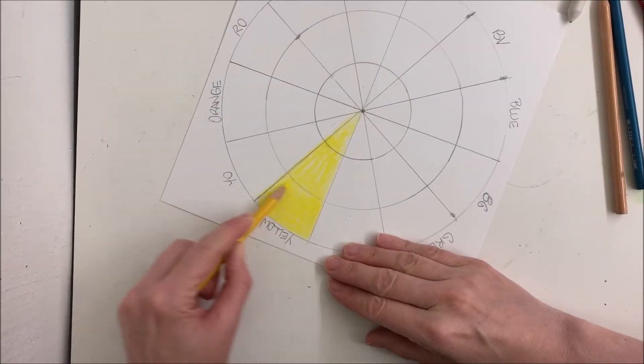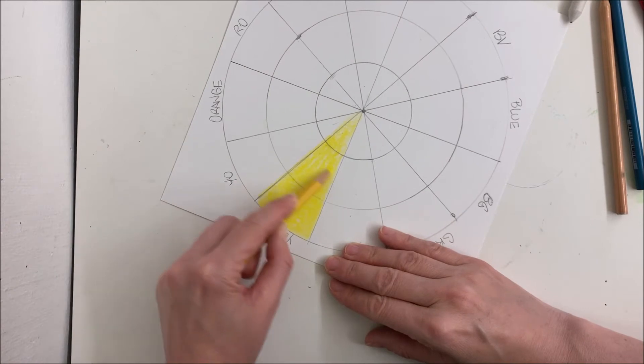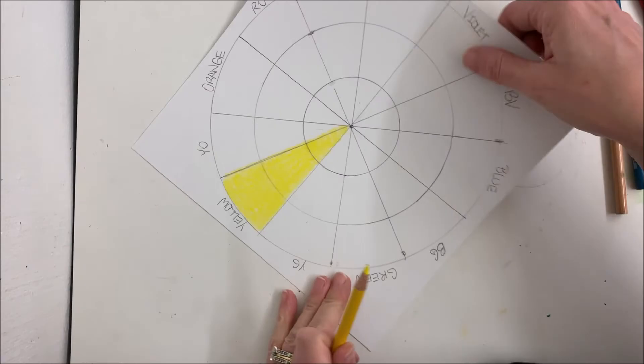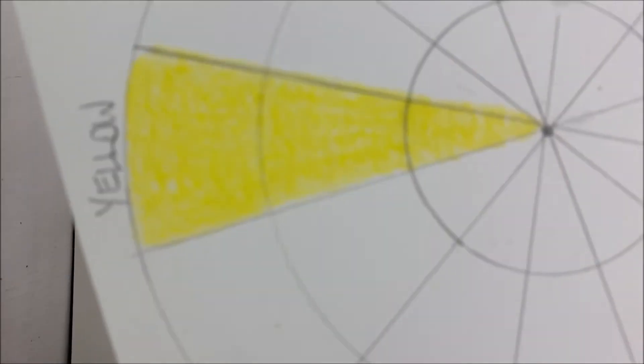Again, I'm using the edge. I'm trying to keep equal pressure on the pencil. I'm going in circles. I still have some white there.